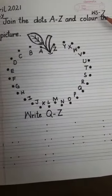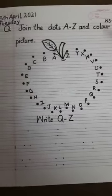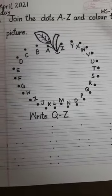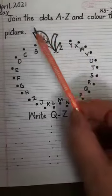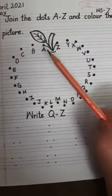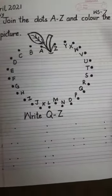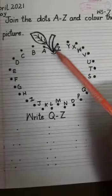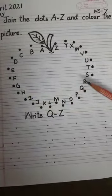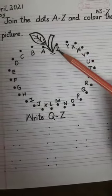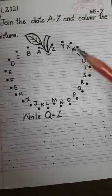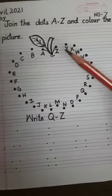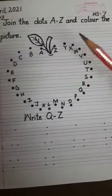This is your English worksheet number 7. What is our worksheet today children? Today you all have to join the dots A to Z and color the picture. First aap A se leke Z tuk dots ko join karenge. Phir aap recognize karenge ki kaun si picture then you have to color that picture.